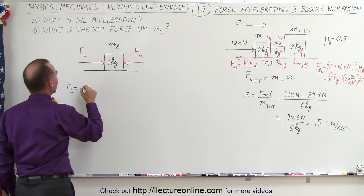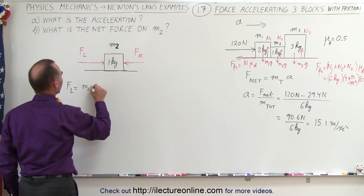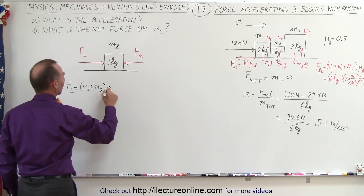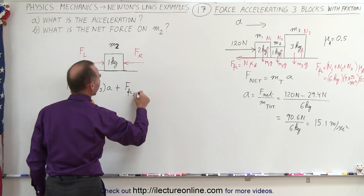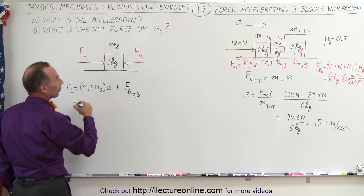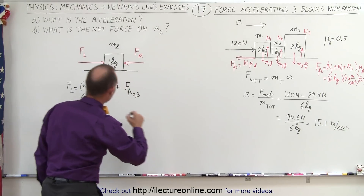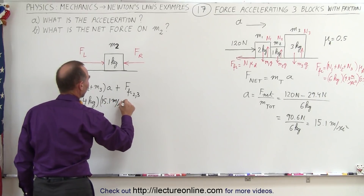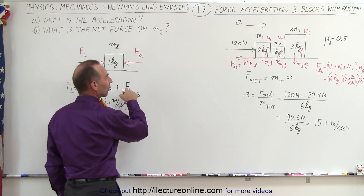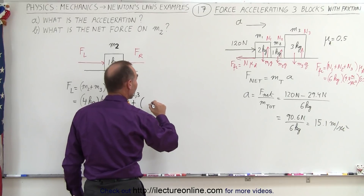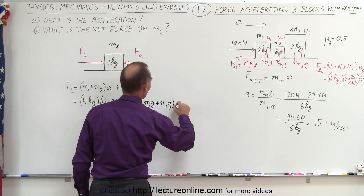The force on the left equals the force required to accelerate M2 and M3, plus the friction force on blocks 2 and 3. So that's (M2 + M3) times acceleration, plus (M2g + M3g) times mu sub k. That's 4 kilograms times 15.1 meters per second squared for the acceleration term, plus the weight of M2 and M3 — which is 1 kilogram and 3 kilograms respectively — times 9.8, times 0.5 for friction.